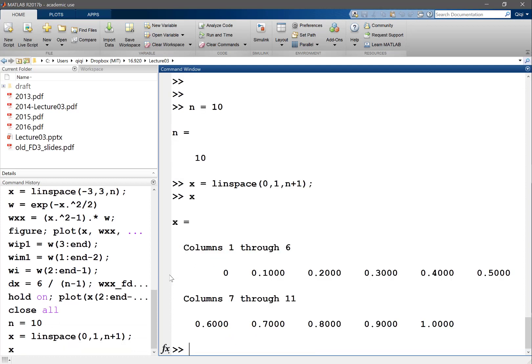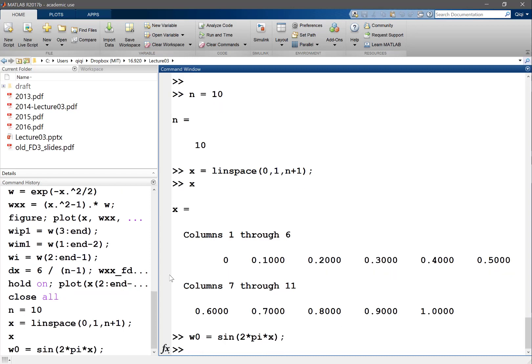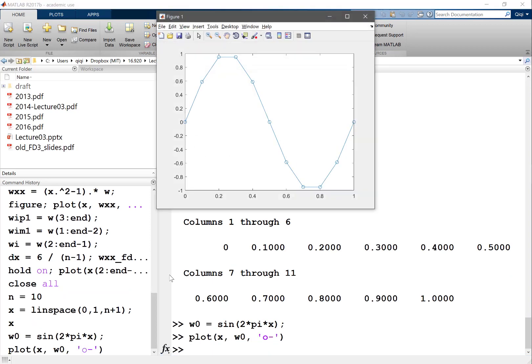So my x is just the 0.1, et cetera. Very nice. And I'm going to set my w, w0, my initial condition, to be sine of 2πk. Let's set k equal to 1 first. I get w0, x and w0, it's a sine function. We're good to go.